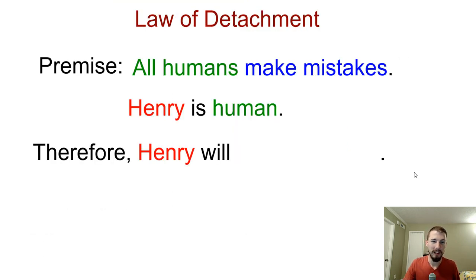Law of detachment. So law of detachment is really simple. It's a form of deduction. So all humans make mistakes. That's our premise. So if this statement, we're assuming it's true, all humans make mistakes. Henry is a human, right? So therefore Henry will make mistakes. So if our premise is true, and then we have this hypothesis that Henry is a human and all humans make mistakes, then we can claim that Henry will make mistakes. That is the law of detachment.